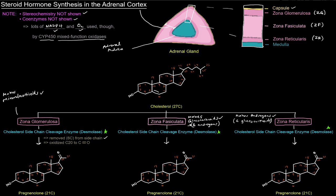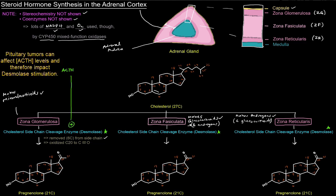Since we're talking about the adrenal cortex, the enzyme catalyzing the rate-limiting or committed step of steroid hormone synthesis is regulated. It's specifically stimulated by adrenocorticotropic hormone, or ACTH, which comes from the anterior pituitary. And that of course is stimulated by corticotropin-releasing hormone from the hypothalamus.